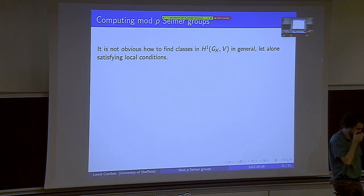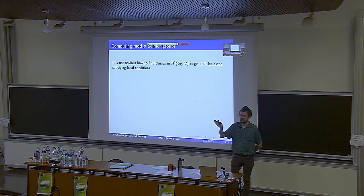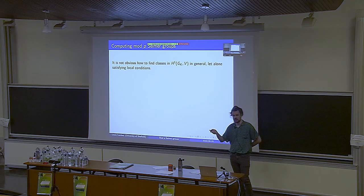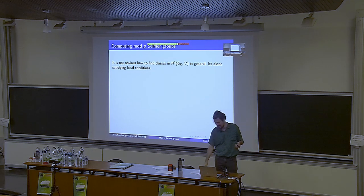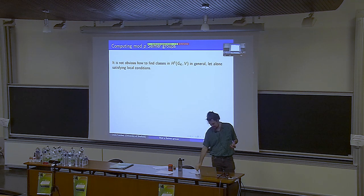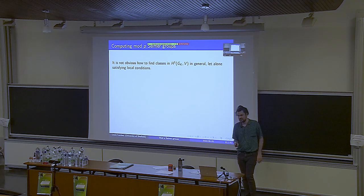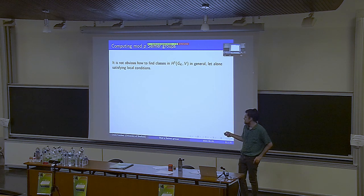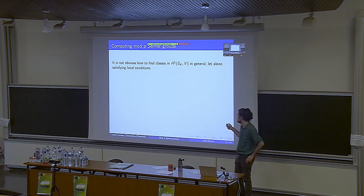Given a representation and its associated number field L, we want to understand the Selmer groups. It's not obvious what these classes should look like — how you find a class that satisfies the conditions you care about is not particularly clear. If you know what group cohomology is, you have twisted homomorphisms from this big group with image in the vector space, but computing those given we don't understand this big group is difficult. The tool that comes to our rescue is the inflation-restriction sequence from group cohomology.